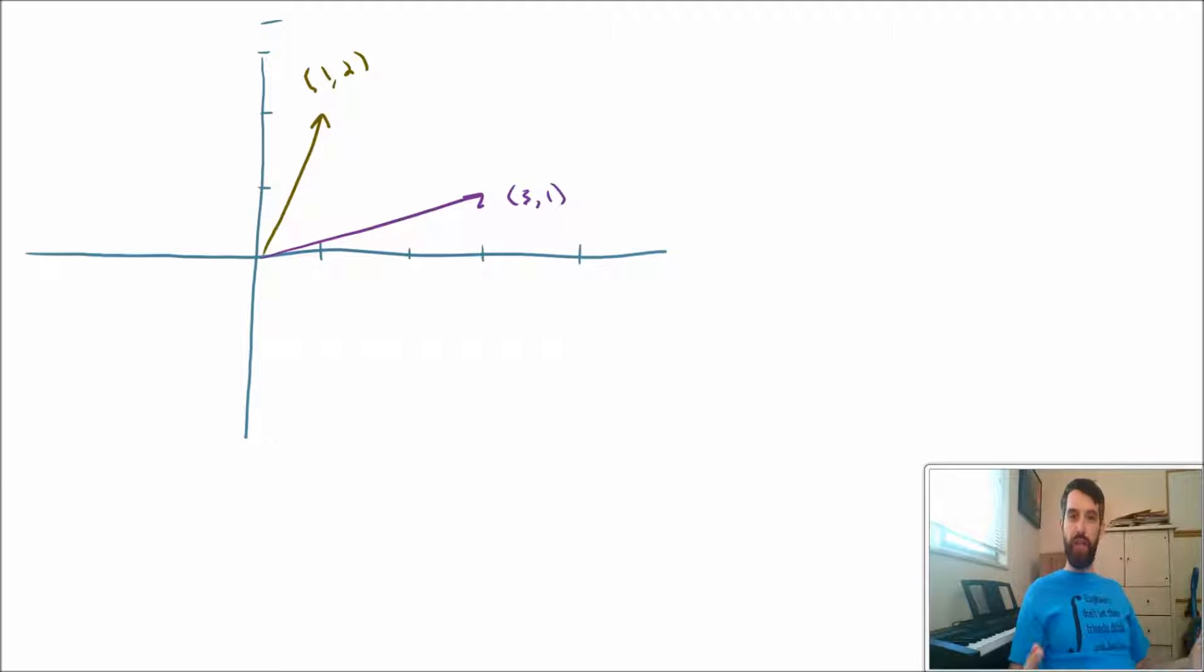One way that I can visualize this is, remember how I said that I can take a vector and I can move it around as long as I don't change its length or its direction? Well, let's take this vector (1,2), and I'm going to plug it in over here. So it's the exact same vector, but I've just moved it over. And then what I can think of is, in the middle of these two, this vector that connects the other two vectors, which are added tip to tail.